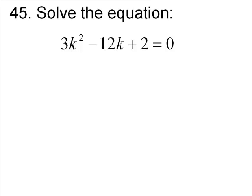Number 45. Solve the equation: 3k² - 12k + 2 = 0.